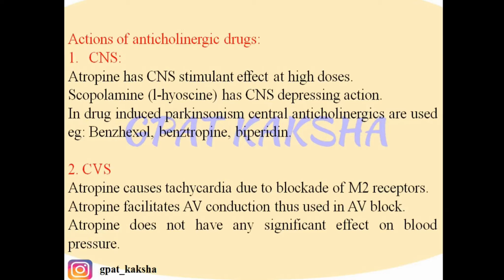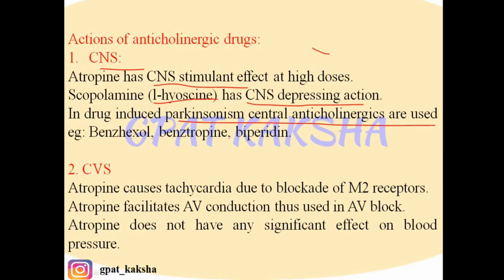The actions of anticholinergic drugs on the central nervous system: atropine has a CNS stimulant effect — it stimulates the CNS and increases wakefulness. Scopolamine, also known as L-hyoscine (the levo-isomer of hyoscine), has a CNS depressing action. In drug-induced parkinsonism, cholinergic activity increases, so central anticholinergic drugs like benzhexol, benztropine, and biperiden are used for treatment.